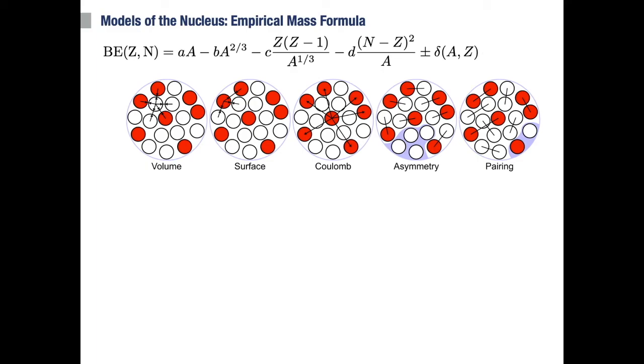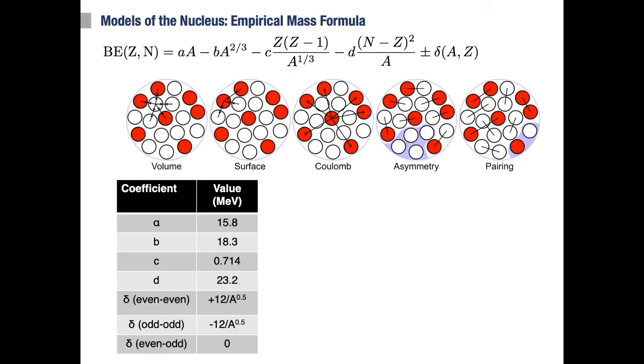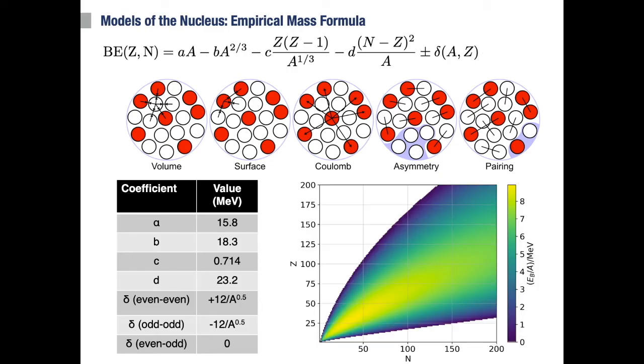Now, how do we determine these coefficients? To justify the name empirical, these coefficients are, of course, determined by fitting the experimental masses. This plot here shows the predicted energy as a function of neutron and atomic number. The light color in the middle represents high binding energy, so more highly bound nuclei, whereas the dark colors represent loosely bound nuclei. Perhaps not unexpectedly, the more stable nuclei are indeed located along this valley of stability that generally traces the Z equals N line.